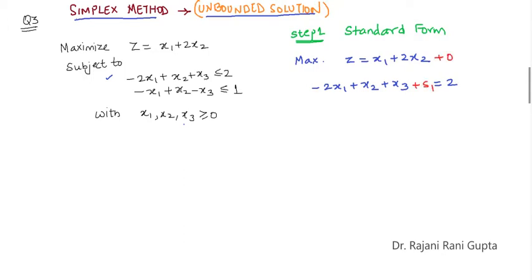As it is not making any difference in the objective function, we add it with 0 coefficient. For the second constraint, minus x1 plus x2 minus x3, we want to make it equal to 1. So we add here slack variable s2, which will be added in the objective function with 0 coefficient. Now with the non-negativity restriction on the variables x1, x2, x3, s1 and s2.